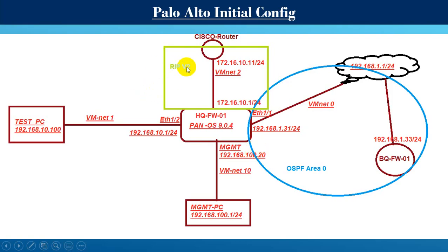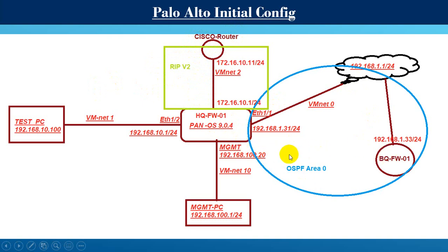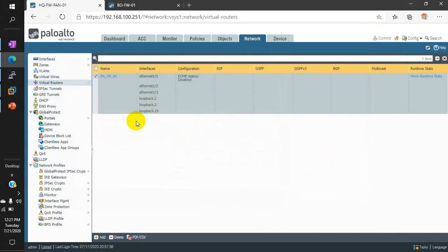This is our topology. Here we are using one Cisco router. Between the Cisco router and the headquarter firewall, we are going to use RIP routing protocol, and the Cisco router is placed in the DMZ zone. Between the headquarter and branch office, we are going to configure OSPF area 0.